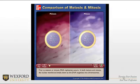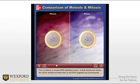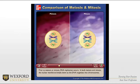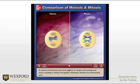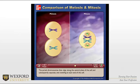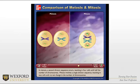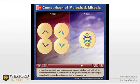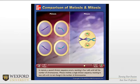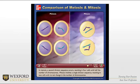I'm using a lot of animations in this module because the visualization helps. Prior to meiosis or mitosis, DNA replication occurs. In both, the nuclear membrane breaks down as the DNA organizes into chromosomes. In meiosis, chromosome pairs come together, or synapse, and crossing over occurs, resulting in mixing of the genetic information between the chromosome pairs. The paired chromosomes then align along the central plate of the cell and subsequently separate, one traveling to each end. In meiosis, a second division sequence occurs, resulting in four cells with half the number of chromosomes. Mitosis involves a single division sequence, resulting in two cells with no net change in chromosome number.